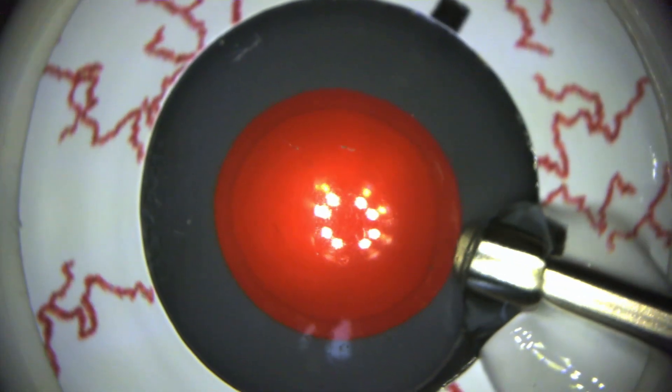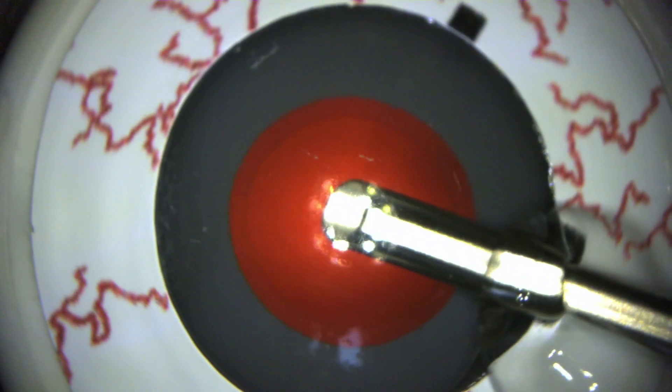Insert the injector through the primary incision. With the tip of the injector just past mid-pupil, slowly advance the device.